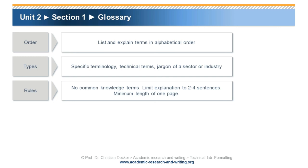The glossary listing and explaining terms is ordered in alphabetical order. Specific terminology, technical terms, and the jargon of a sector or industry are to be included. No common knowledge terms are to be included in the glossary. A limit of two to four sentences per explanation should be kept. The minimum length of a glossary is one full page.